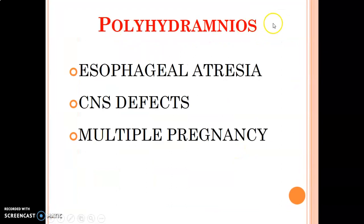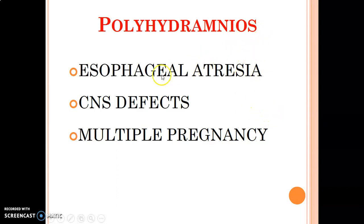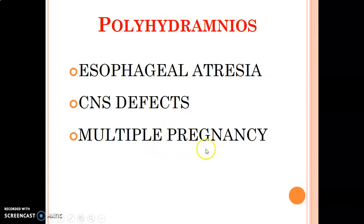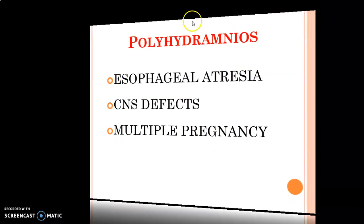Polyhydramnios is when amniotic fluid exceeds 2,000 mils. Causes include esophageal atresia — since circulation of amniotic fluid involves the fetus swallowing, if you cannot swallow because the esophagus is obstructed, you get polyhydramnios. Central nervous system defects affecting the brain can also prevent swallowing, causing polyhydramnios. In cases of multiple pregnancy, the placenta is overworking, producing a high volume of fluid, leading to polyhydramnios.